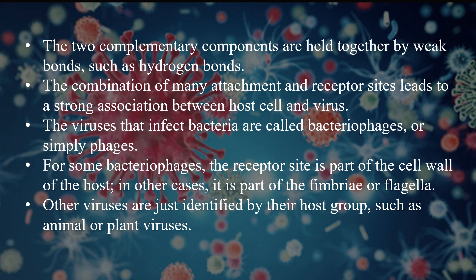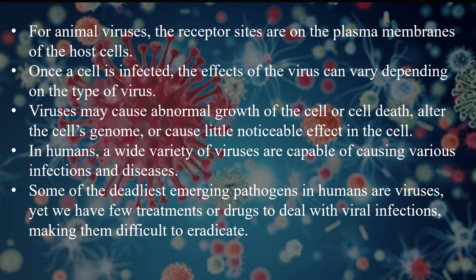Other viruses are identified by their host group, such as animal viruses or plant viruses. For animal viruses, the receptor sites are present on the plasma membrane. Once the cell is infected, the effects produced by the virus can vary — they may cause abnormal growth, cell death, or alteration of the cell's genome, or some viruses may produce no noticeable effect. In humans, a wide variety of viruses are capable of causing infections and diseases, and some of the deadliest emerging pathogens are viruses, yet we have very few treatments or drugs to deal with viral infections, making them difficult to eradicate.